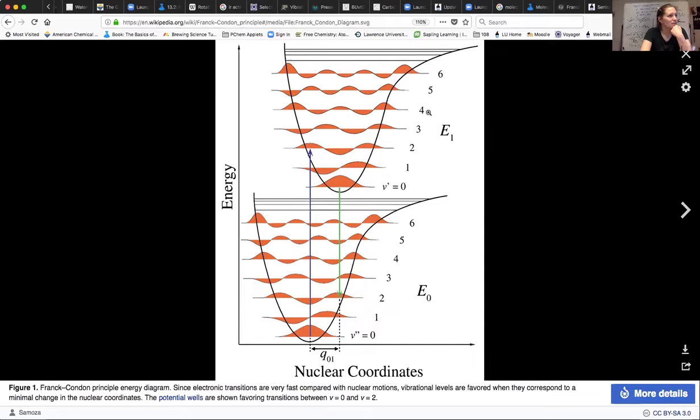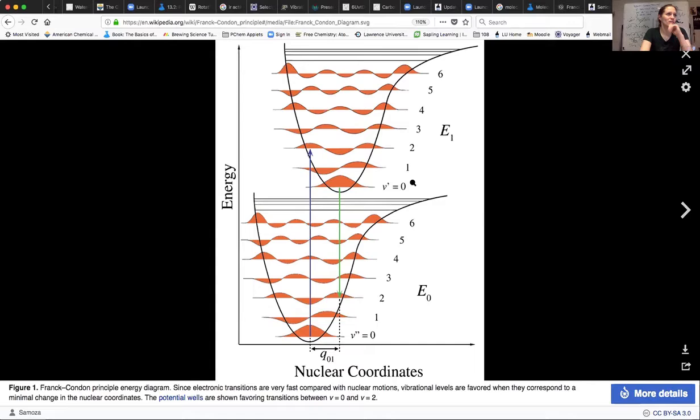So that's the Frank-Condon principle. Really exciting. I should say, the farther over this moves, so let's say that the state is very far over, then you'd actually have what's called phosphorescence, which is the delayed decay. Actually let me find a picture of that.